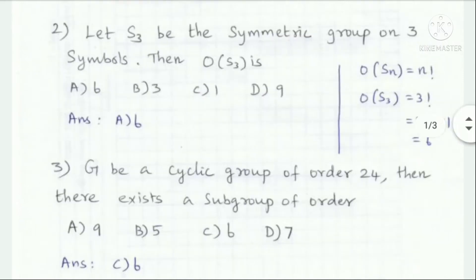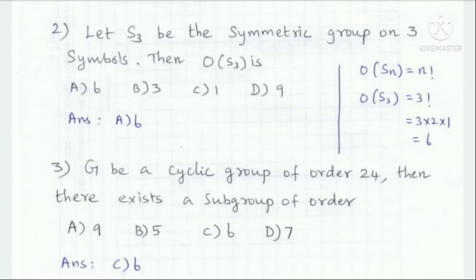Let S3 be the symmetric group on 3 symbols. Then the order of S3 is — in general, Sn is the symmetry group and its order is n factorial. So S3 is 3 factorial, which equals 3 × 2 × 1 = 6 elements. The answer is option A: 6.